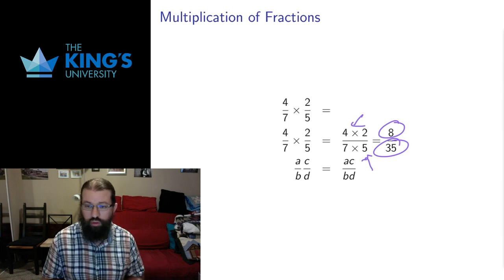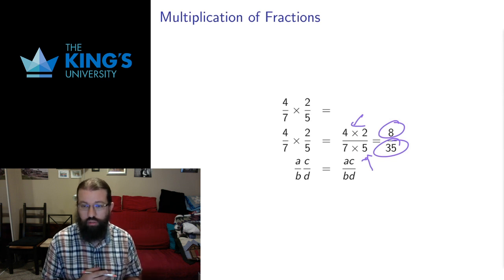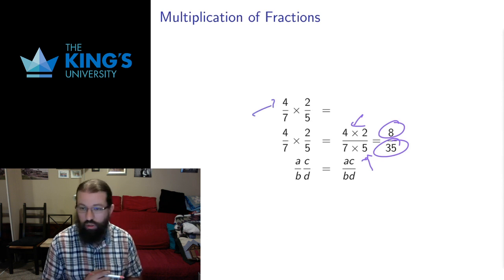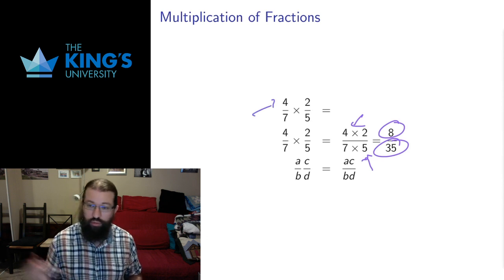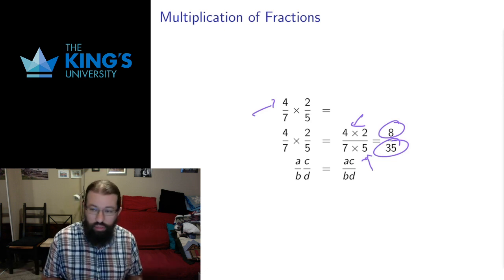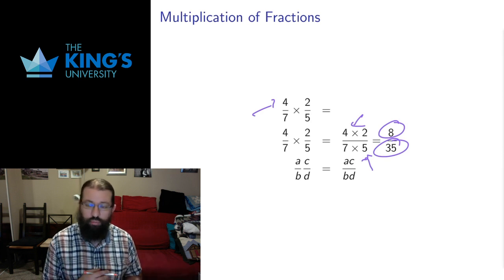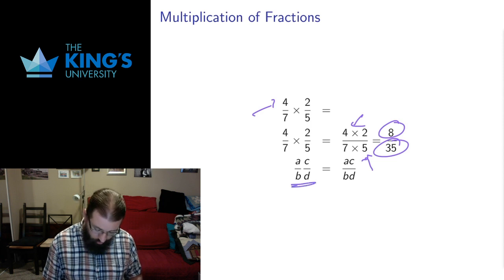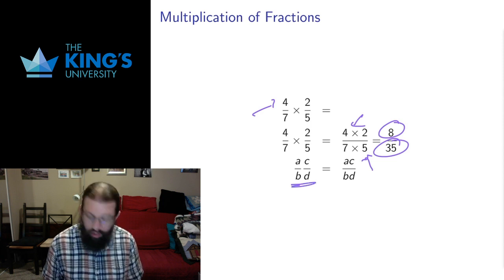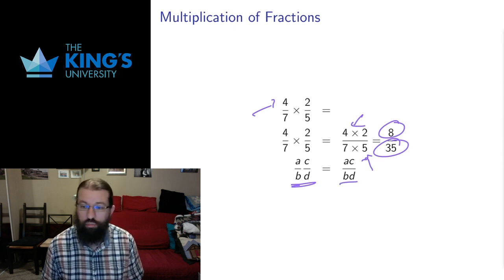You can think of this as related to order of operations: all of this division and multiplication can happen in any order you want. What we're doing is taking four, multiplying by two, dividing by seven, dividing by five — you can do those in whatever order you wish and still get the same result. These are just a sequence of multiplications and divisions. In general, if I have a fraction a over b and a fraction c over d, multiplying them together gives the fraction ac over bd.